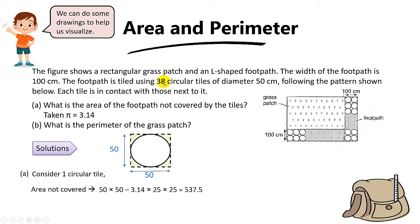Since there are 38 of them, we simply take this answer times 38 to find the total area which is not covered by the circular tiles. When you take this times 38, you will get a final answer of 20,425 cm squared. That will be the answer for part A.